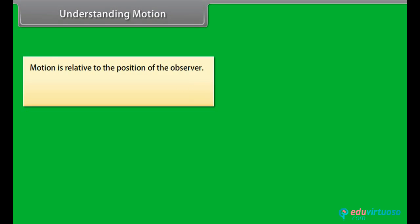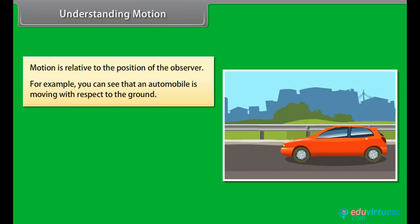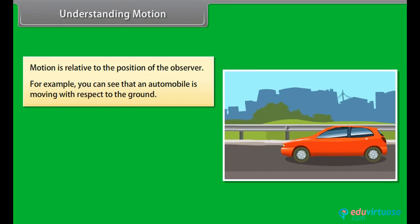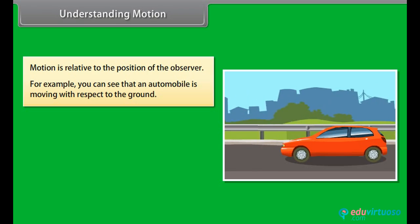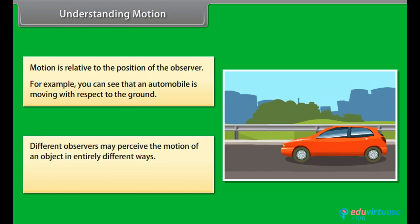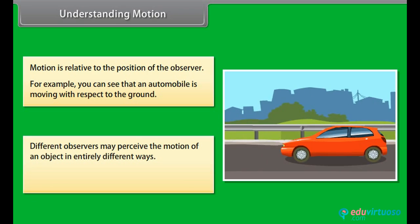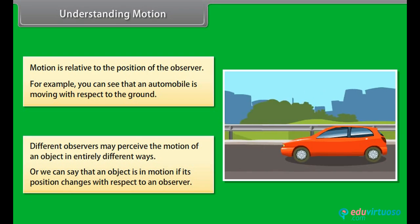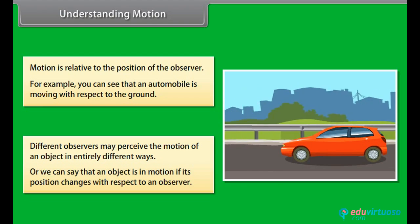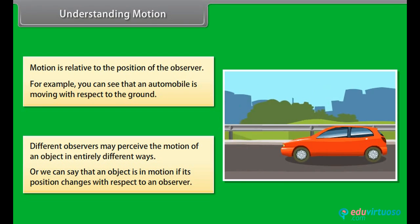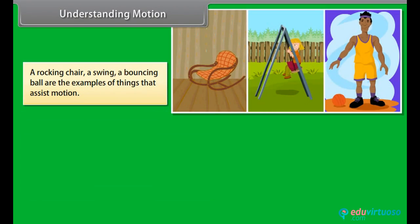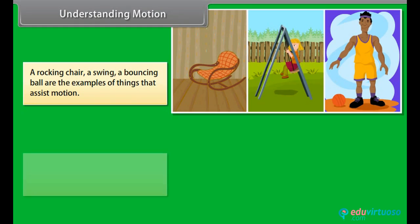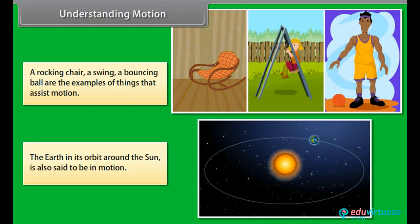Motion is relative to the position of the observer. For example, you can see that an automobile is moving with respect to the ground. Different observers may perceive the motion of an object in entirely different ways. An object is in motion if its position changes with respect to an observer. A rocking chair, a swing, and a bouncing ball are examples of things that exhibit motion. The earth in its orbit around the sun is also said to be in motion.